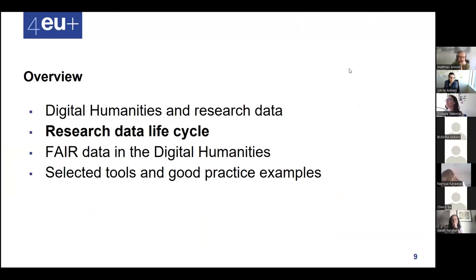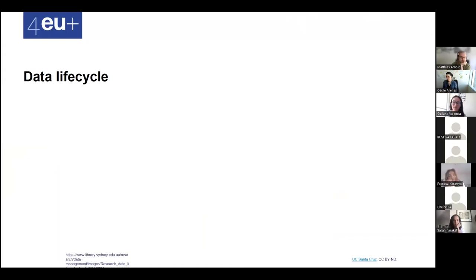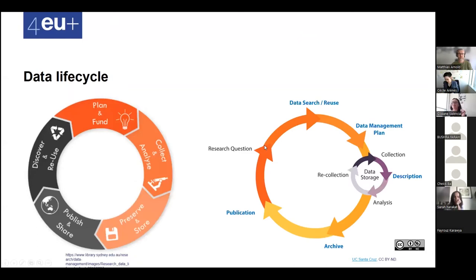Now we are talking about the research data life cycle. To identify the main stages of data management in a project we speak of a data life cycle. The first stage is of course where we plan the project, identify the corpus we are going to use, and the outcomes we plan to produce.